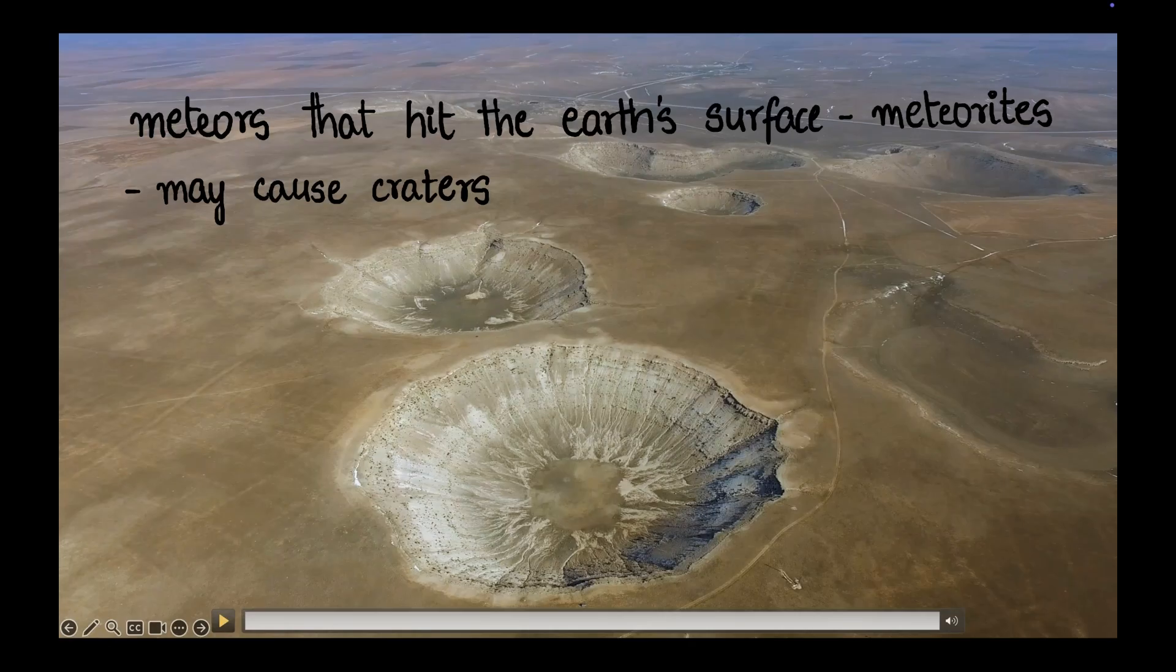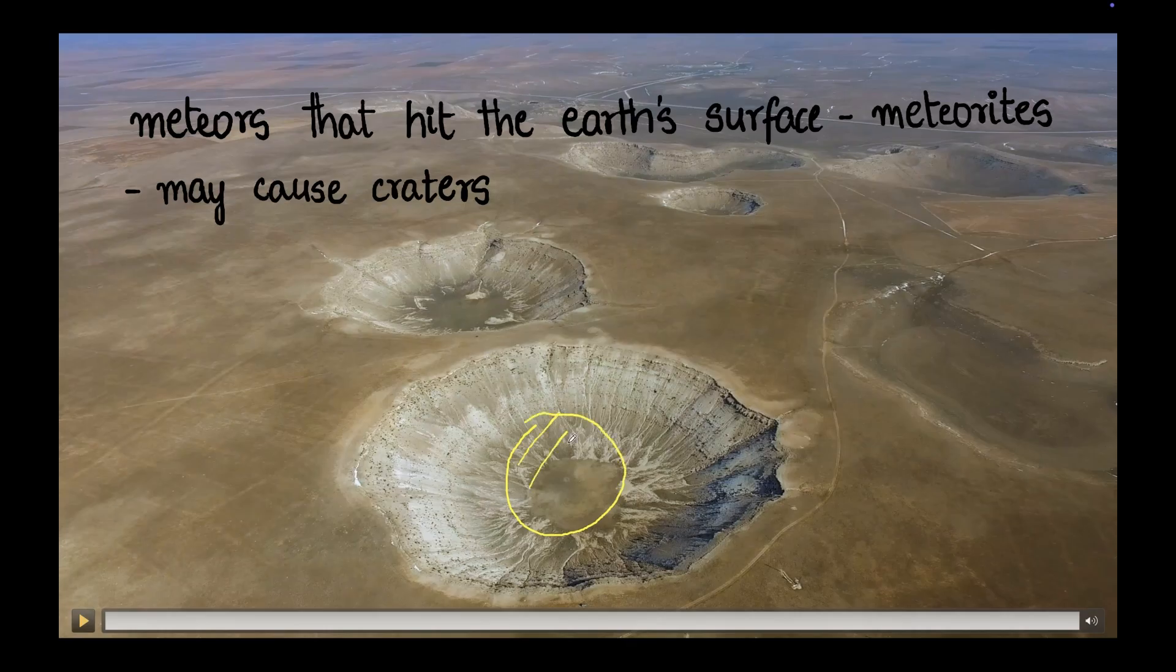Now your question might be, if you claim that this was created by a meteor, where is the meteor? Or where is the meteorite? I don't see a rock here. What actually happens is it continues to burn, and finally burns out completely, evaporates, and some dust is left over in this crater. But the rock as such, the meteorite as such, is all evaporated and gone. So that's why you can't see the meteorite there.